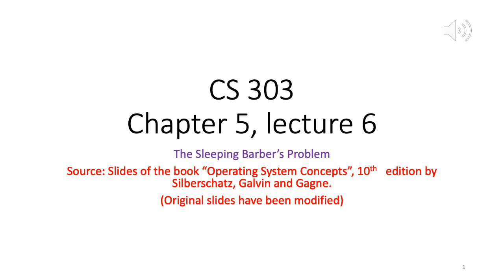We have learned that semaphores can be a useful technique to ensure synchronization among multiple processes and threads. Using semaphores, we have solved two classical synchronization problems: the producer-consumer problem and the readers-writers problem. Next, we will look at another classical synchronization problem and then discuss some more issues related to synchronization, including priority inversion.